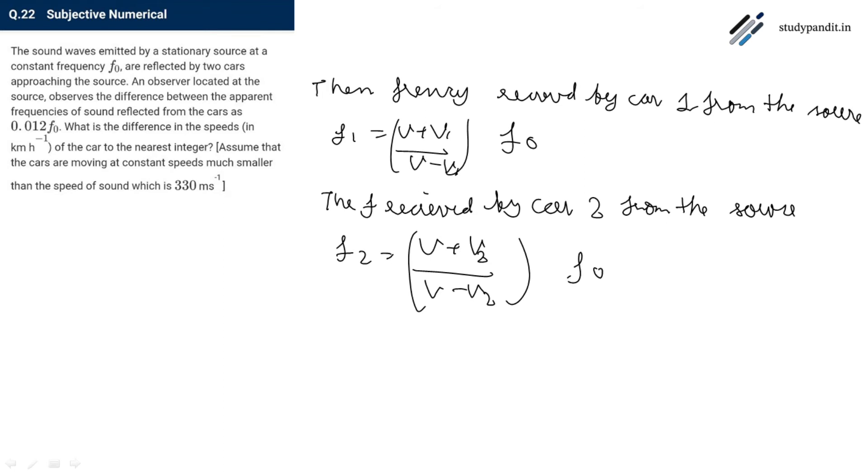The difference F1 minus F2 equals to V plus V1 by V minus V1 minus V plus V2 by V minus V2 into F0, which equals to 2V times V1 minus V2 by V minus V1 times V minus V2.